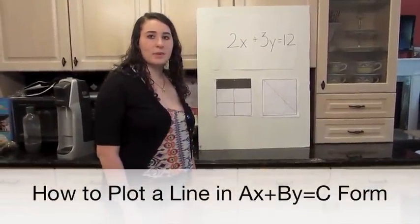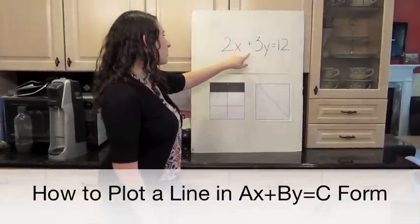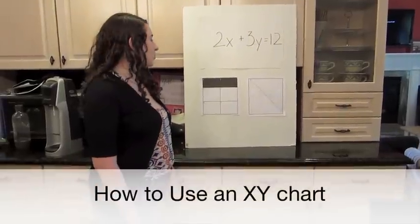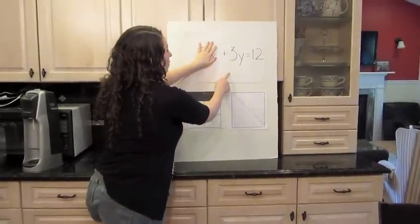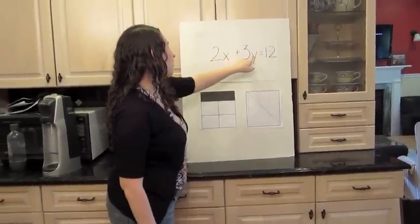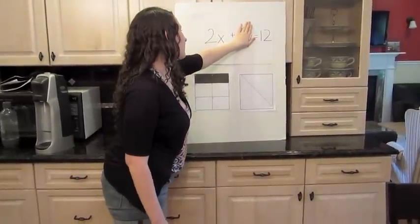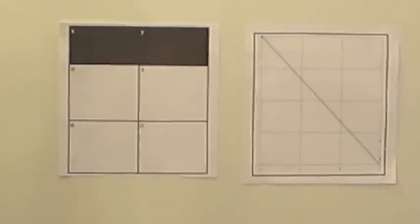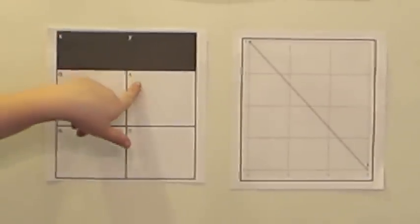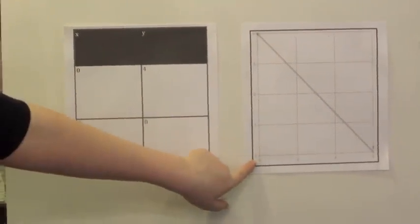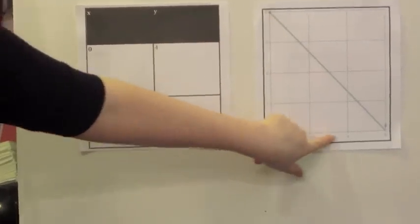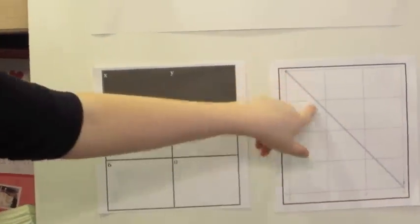2x plus 3y. What is ax plus by equals c form? Today I'm going to teach how to plot a line in ax plus by equals c form using the equation 2x plus 3y equals 12. First we will demonstrate how to use an xy chart. You set x to 0 and you solve for y, which would be 4. Then you set y to 0 and then you have x equals 6. Then you add to your chart: x equals 0 is 4 and y equals 0 is 6. For x is 0, y is 4. For x is 6, y is 0. Then you connect the lines.